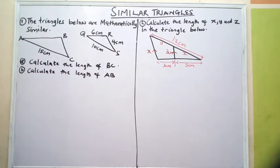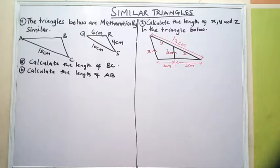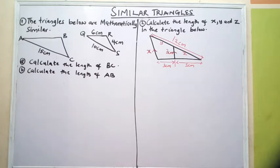This kind of problem we are solving today has to do with a length-related problem. Because if you look at the question, part A says calculate the length of BC, and part B says calculate the length of AB. Because we want to find length, there is an important thing you need to know in a similar triangle: how to get a scale factor.